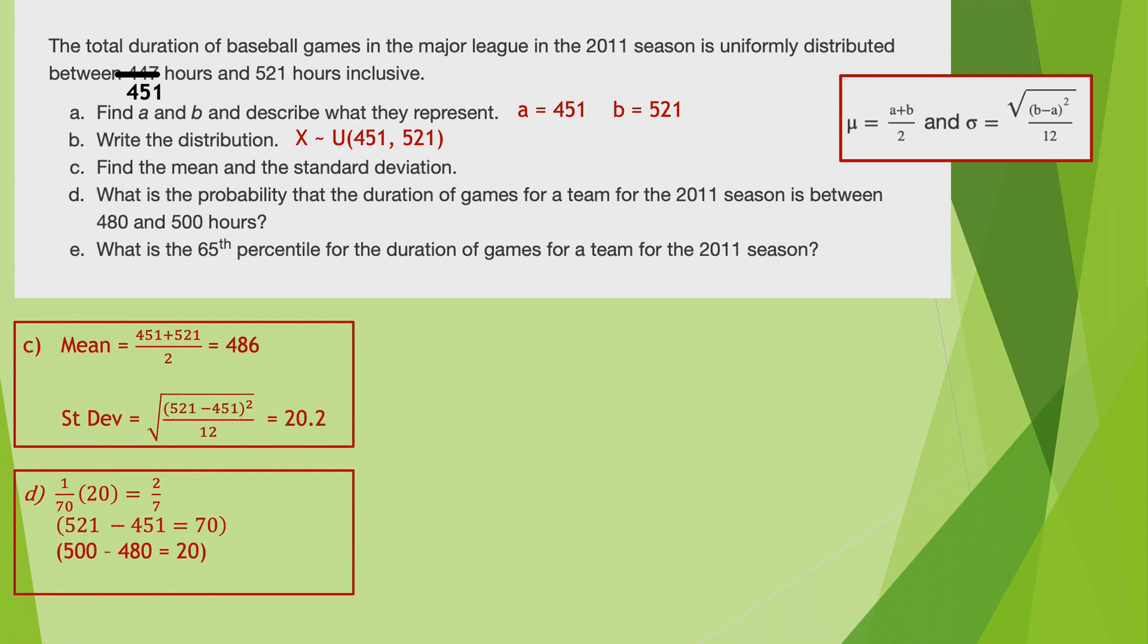And let me just go back one there. And the mean works out to be 451 plus 521 over 2. That's A and B, A plus B over 2, which is 486.